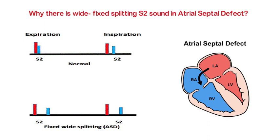Let's assume 100 milliliters of blood is in the right ventricle and 60 milliliters in the left ventricle. Hence, the pulmonary valve closes late because the right ventricle has to pump more blood through the pulmonary valve, so P2 gets delayed. On the other side, the left ventricle empties sooner because of less blood, so A2 closes earlier. Thus there is wide splitting in inspiration.